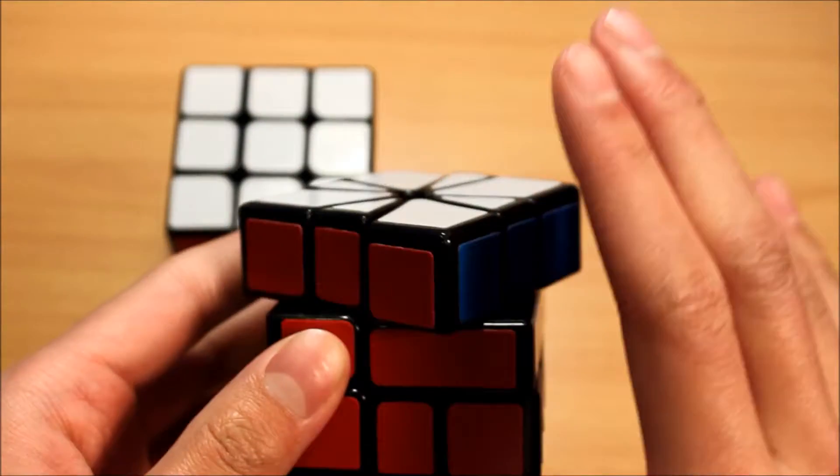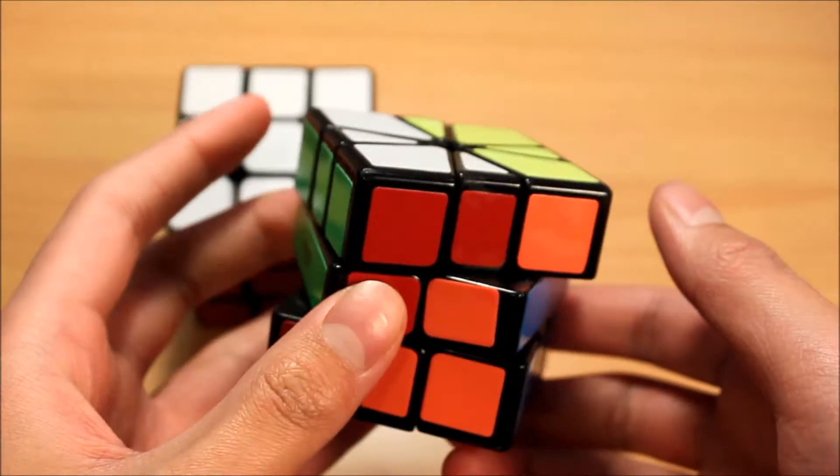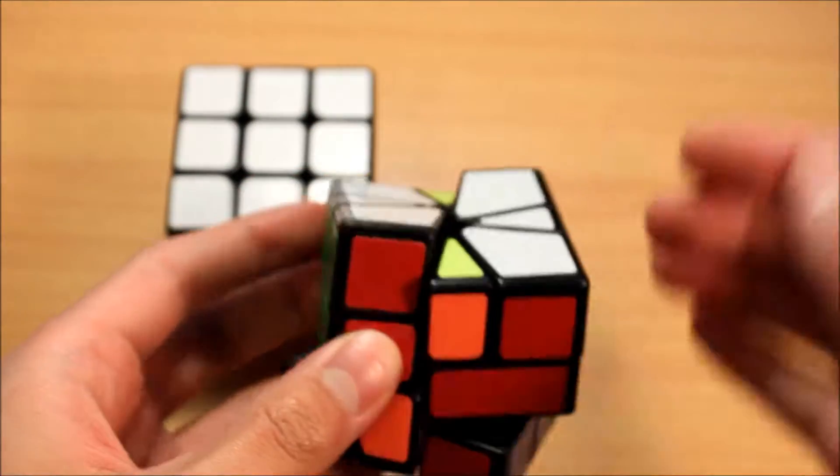And the move is called M2. So basically it's one slash, negative one, negative one, slash one.